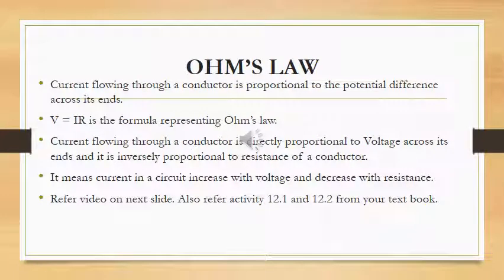Ohm's law. Current flowing through a conductor is proportional to the potential difference across its ends. That means we know V is proportional to I. We can write V equal to IR, where R is the resistance of the conductor.